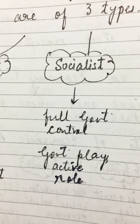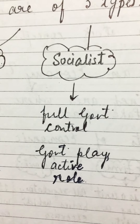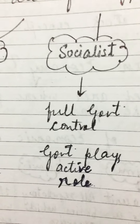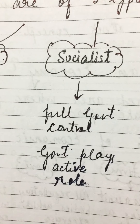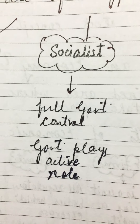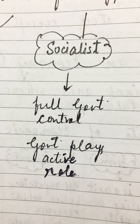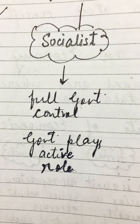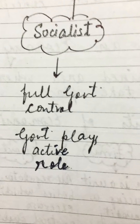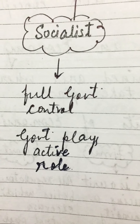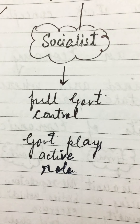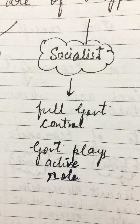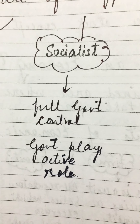Then comes the second type, which is the socialist economy - it is just the opposite of capitalist. This means full government control, and the government plays a very active role to manage this type of economy. There is no intervention of private individuals - everything is according to the government.